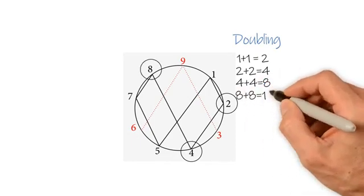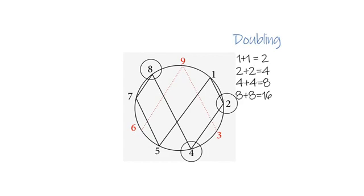And 8, if doubled again, becomes 16. If we add 1 and 6 together, we get 7. Let's just follow the underlying pattern.